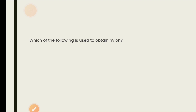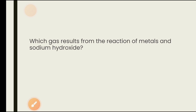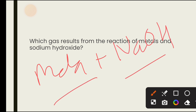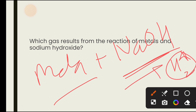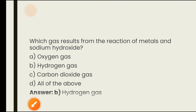Which is used to obtain nylon? Options are air, coal, water, all of the above. Nylon is the first completely artificial fiber, obtained from air, coal, and water — all three. The answer is all of the above. Also, which gets result from the reaction of metal with sodium hydroxide? When any metal reacts with a base like sodium hydroxide, hydrogen gas is released.